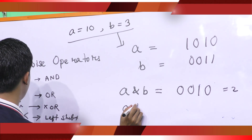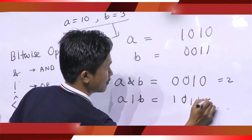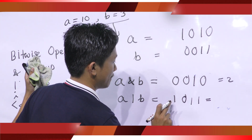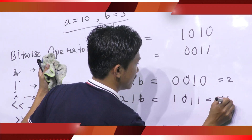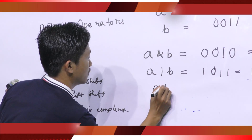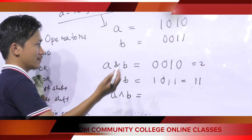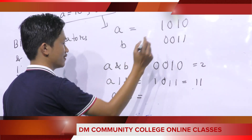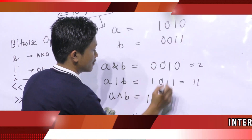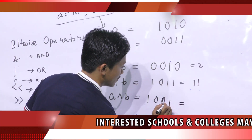A OR B returns 1011. A XOR B: the XOR operator returns 1 whenever exactly one of the bits is 1. Working through the bits: 1, 0, 1, 0 XOR 0, 0, 1, 1 gives 1, 0, 0, 1 — the binary equivalent is 9.